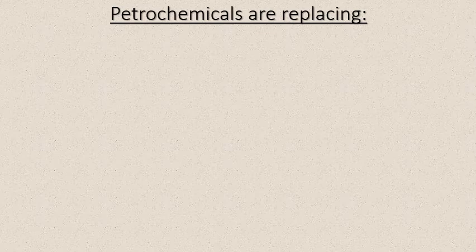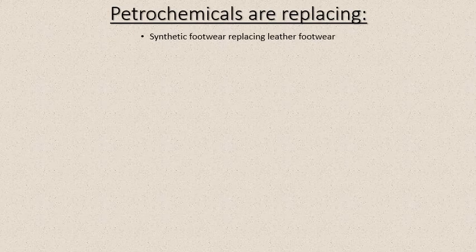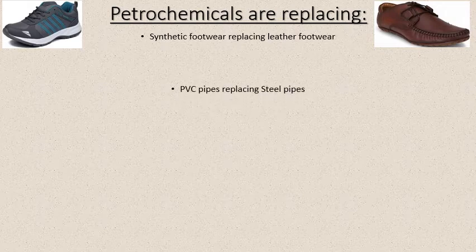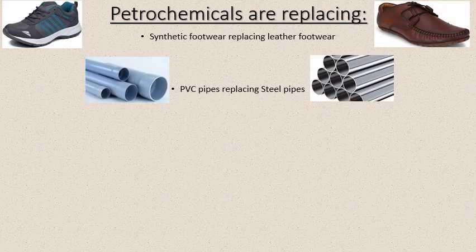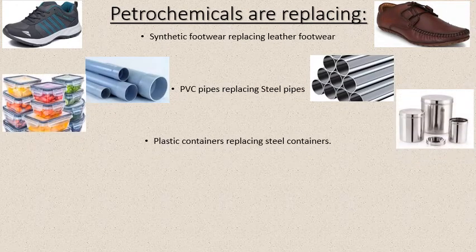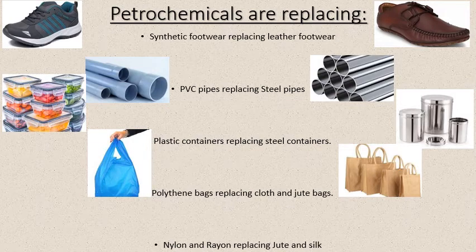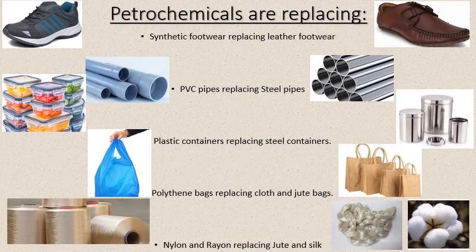The video showed how plastics started from nowhere and have taken over the world. Let's see how petrochemicals have replaced our daily products. Synthetic footwear has replaced leather footwear. PVC pipes are replacing steel pipes. Plastic containers are replacing steel containers. Polythene bags are replacing cloth and jute bags. Nylon and rayon fibers are replacing jute, silk, and cotton. All the pictures showing synthetic products are now dominating today's environment and society.